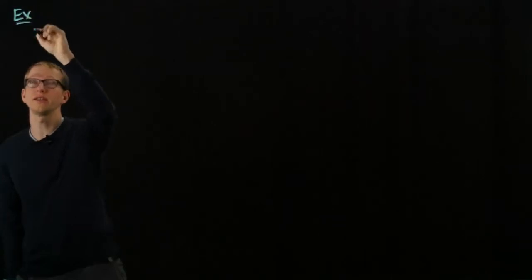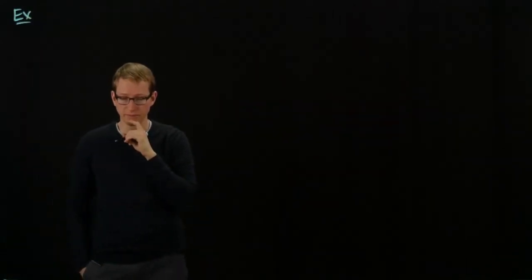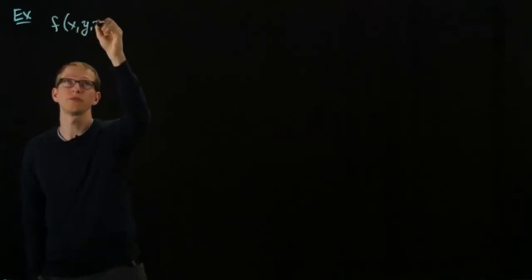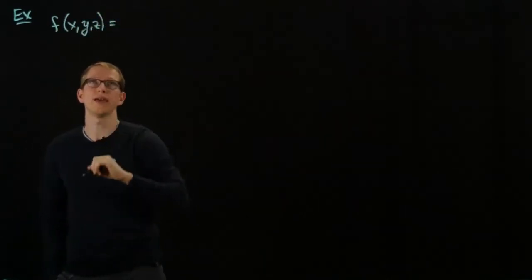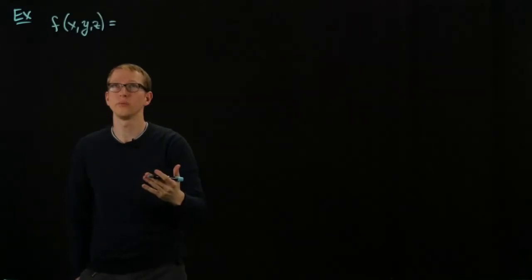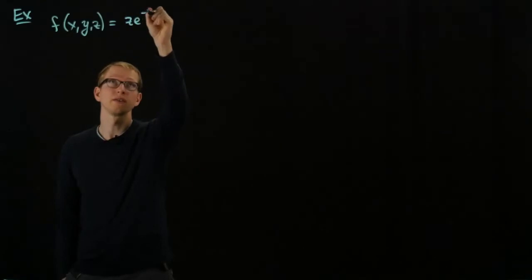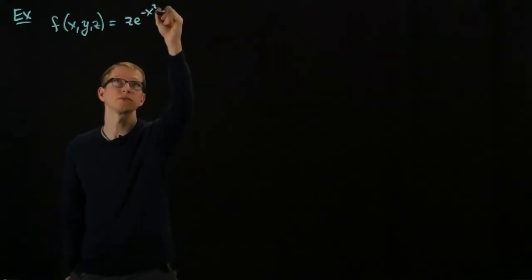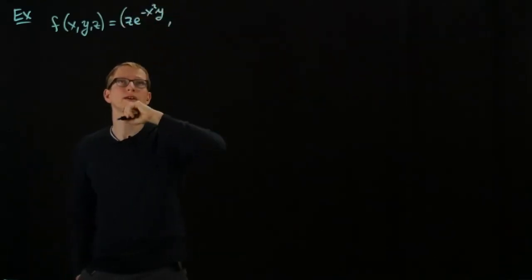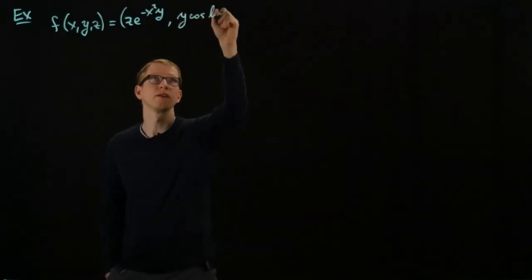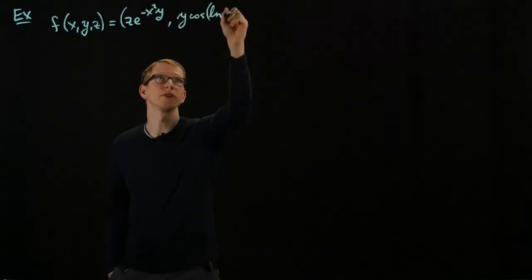We're going to review how to calculate the differential with an example. Let's take a function of three variables with a codomain of R2. This function is given by z·e^(−x²y), comma, y·cosine(ln(x²)).